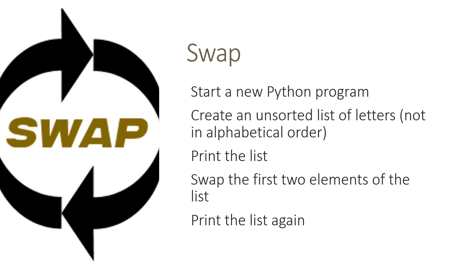Print out the list. Swap the first two elements of the list and print the list again. So it's just a very simple program to show tuple substitution.